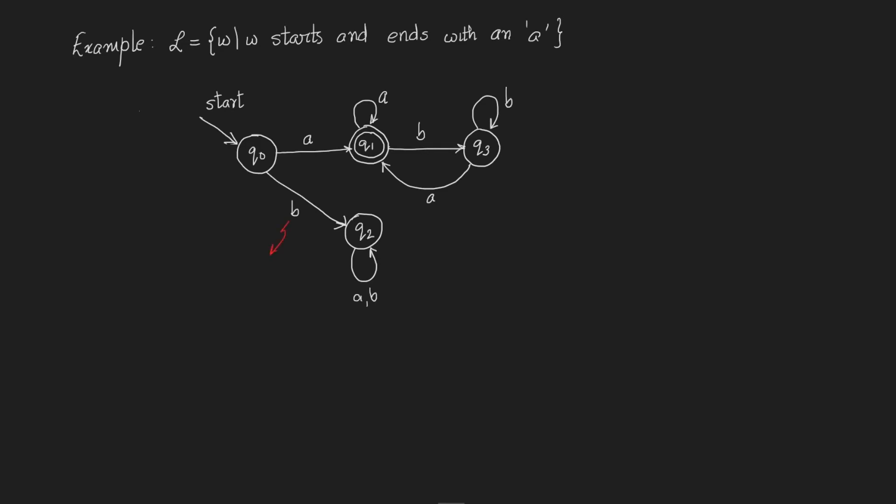The B label on the transition from q0 to q2 indicates that the first symbol seen in the string is a B. Such strings cannot belong to L. q2 here is called a dead state. It's a special terminology used for states from which the machine cannot escape. That means no transitions leave q2 to go to any other state.